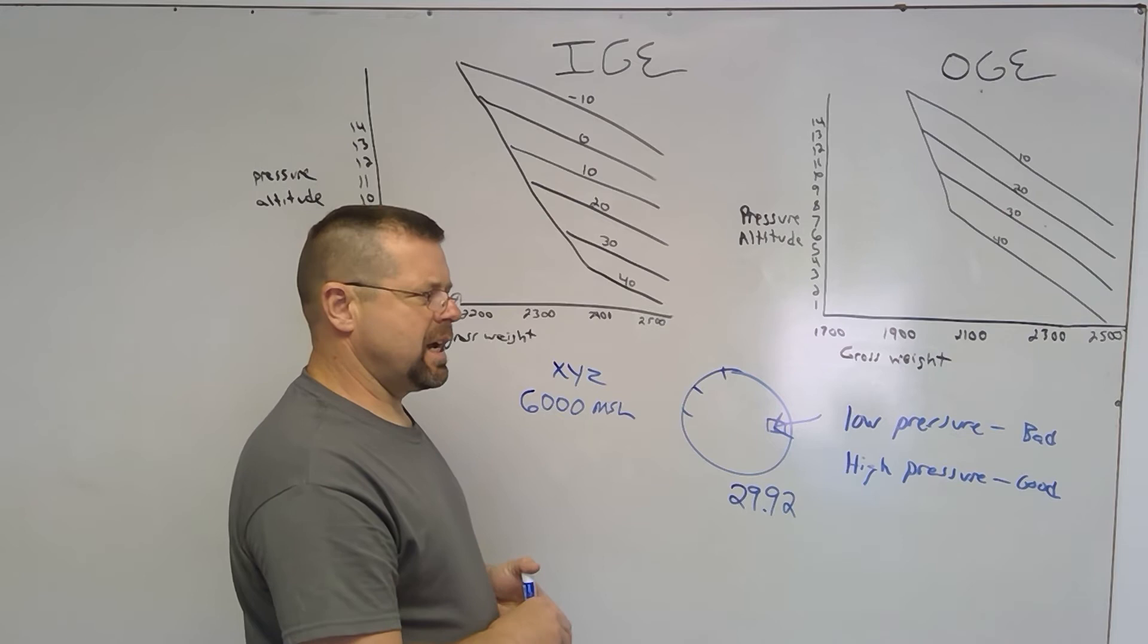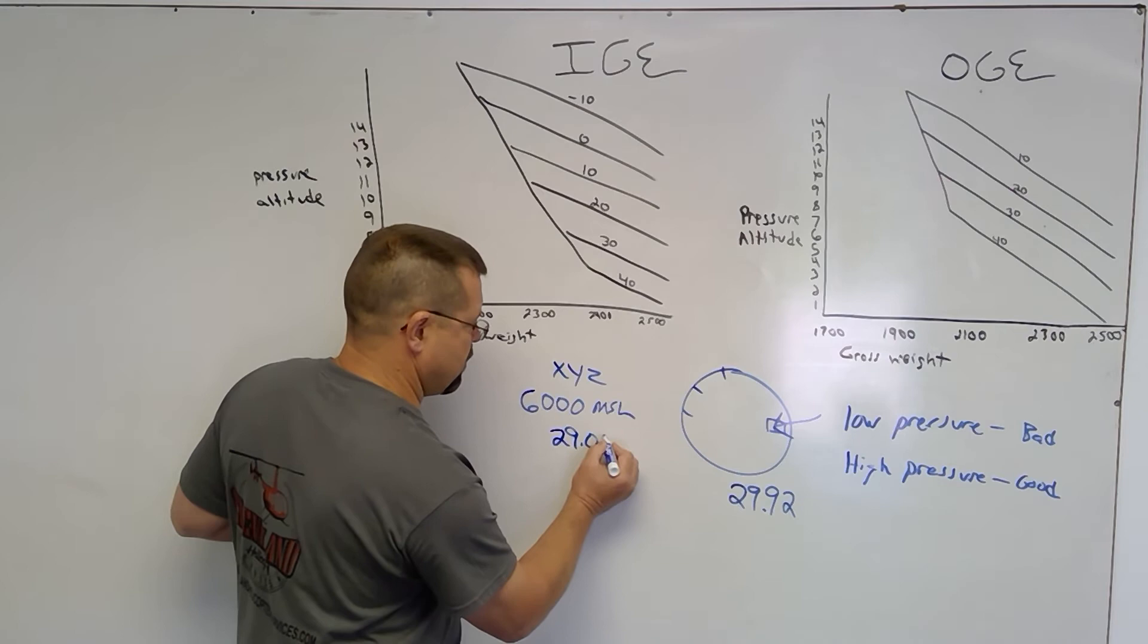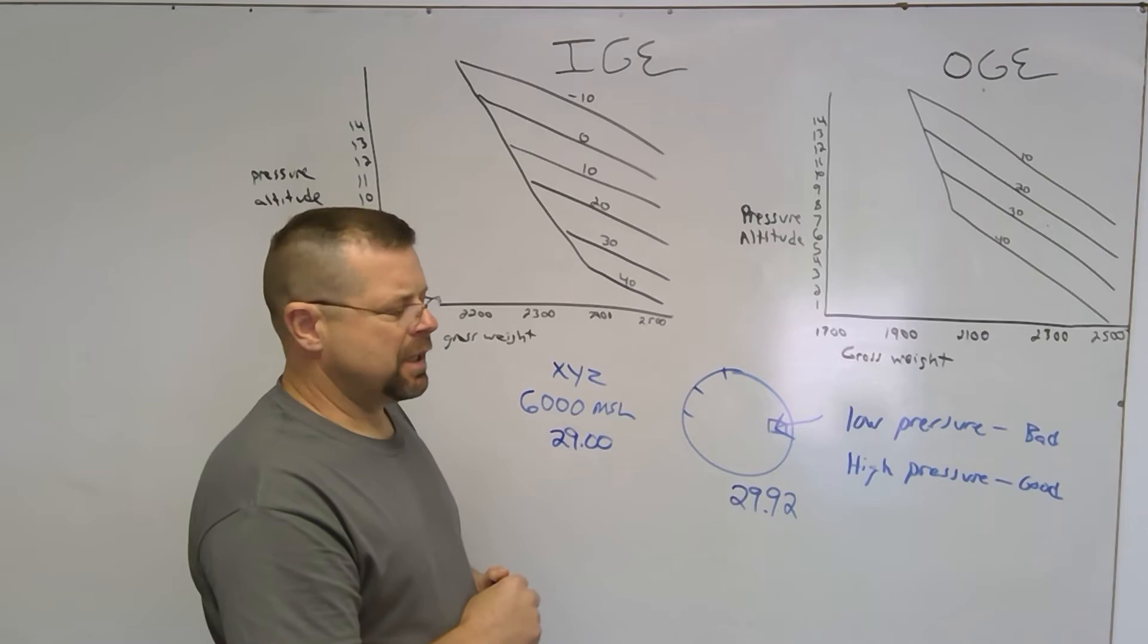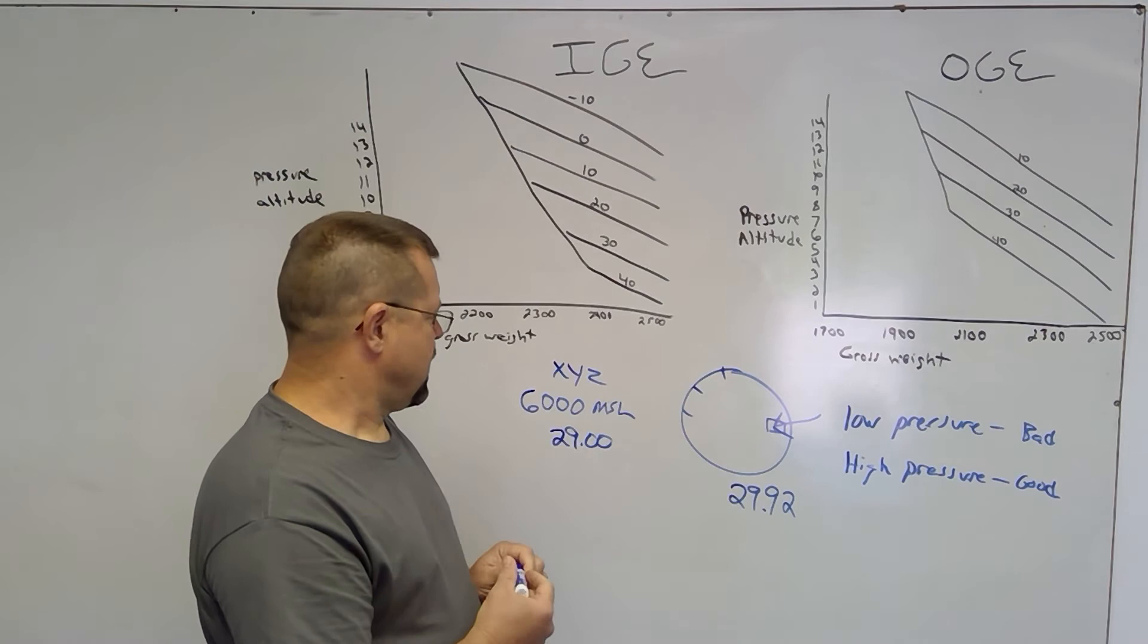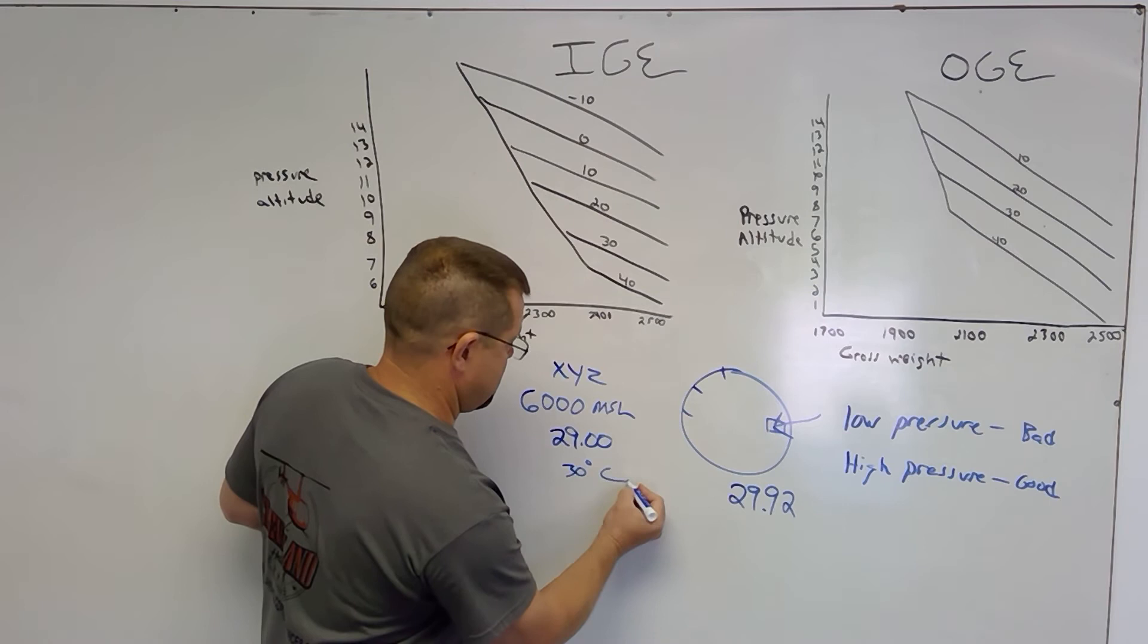Let's say we call up on the weather source if they have an ASOS or AWOS and we find out that the barometric pressure for the day out there is 29.00. So we know right off we have a low pressure day which is going to raise the performance altitude. In other words, the pressure altitude will be higher than the 6,000 known MSL. And let's say that the temperature out there is 30 degrees Celsius.